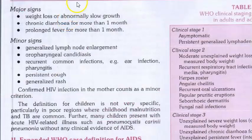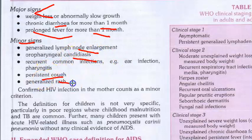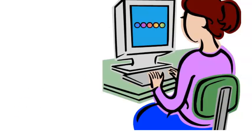For children, major signs are weight loss or slow growth, prolonged diarrhea for more than one month, and prolonged fever for more than one month. Minor signs include lymph nodes, candidiasis, persistent cough, and generalized rash. Lymphadenopathy is also noted.